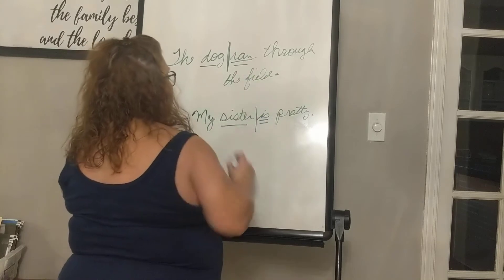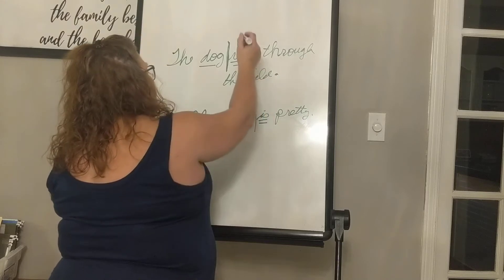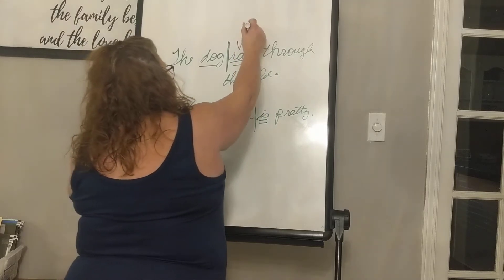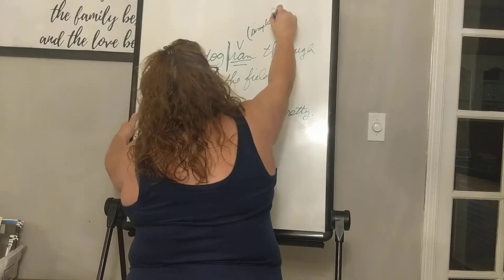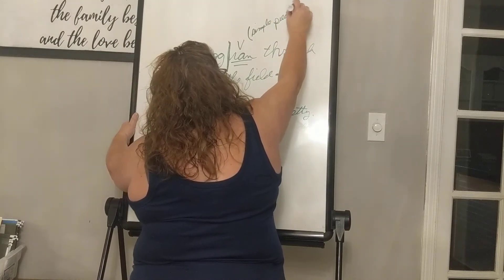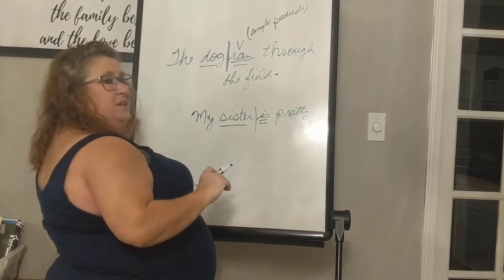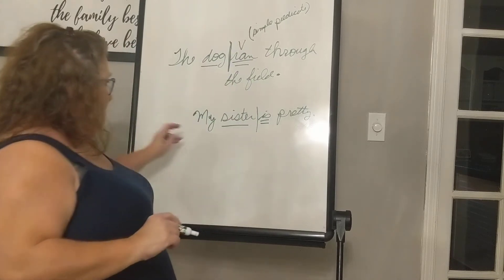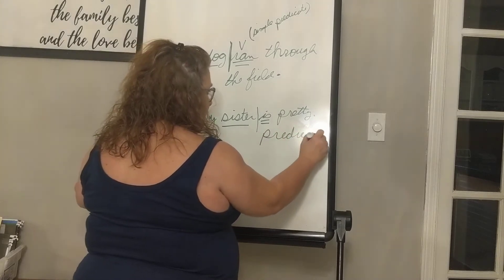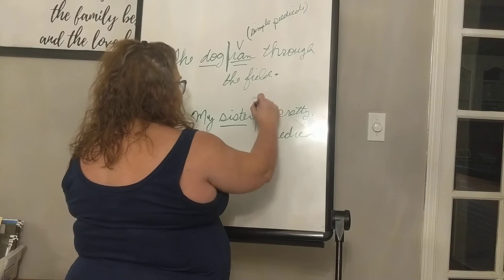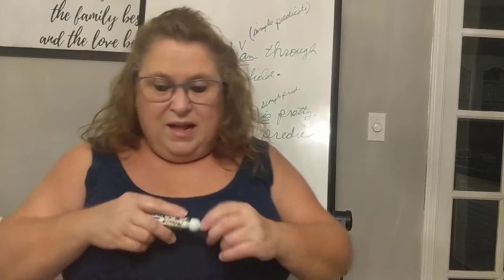You have a simple predicate. The predicate part of our sentence is 'ran through the field' — the word 'ran' is our verb. So the actual verb in the sentence can be referred to as the simple predicate. This is the whole predicate: 'ran through the field.' The simple predicate is just the verb. 'My sister is pretty' — 'is pretty' is the predicate part of our sentence, and the simple predicate — the simple predicate is just the verb 'is.' Makes sense, doesn't it?